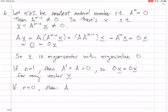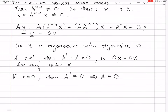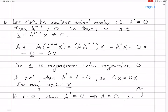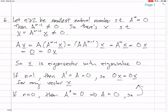If N equals zero, then A to the zero equals zero, which implies A equals zero — by analogy with numbers, X to the zero equals one unless X is zero. So this case also has eigenvalue zero. The stuff about N being greater than or equal to two is technical and unnecessary — the proof goes through directly.